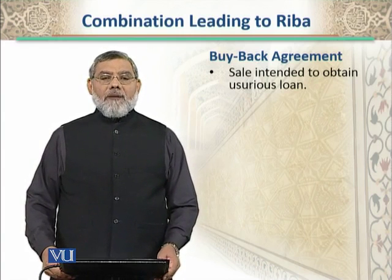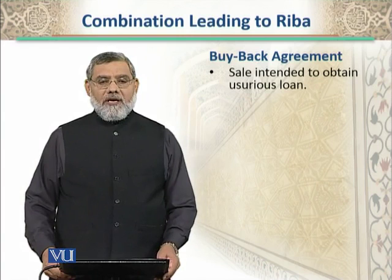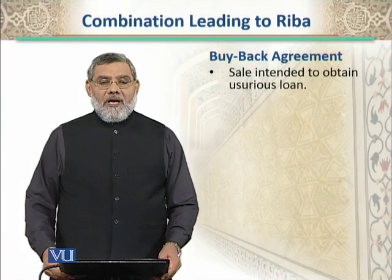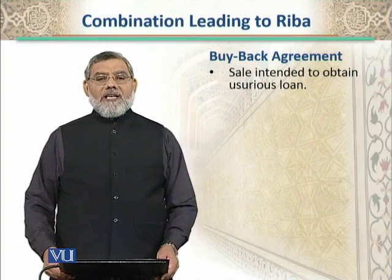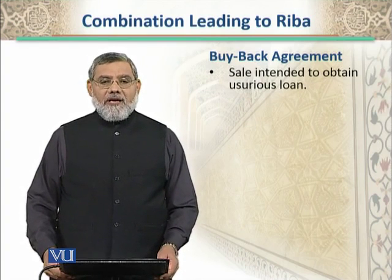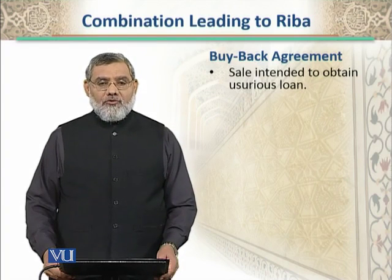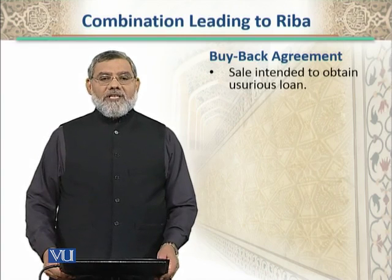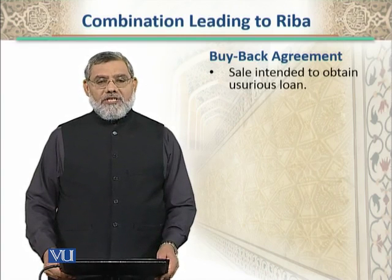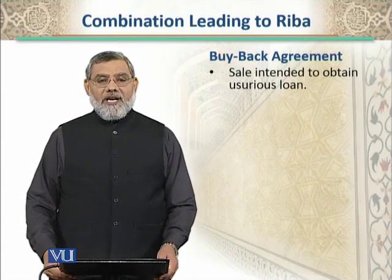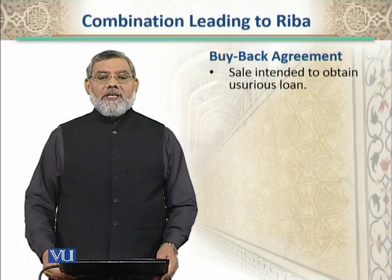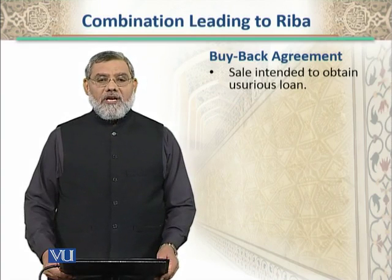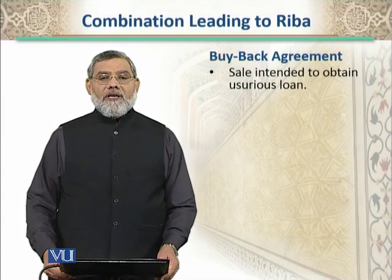This means that a buy-back transaction is taking place here. In reality, A needed eighty thousand rupees, and since he could not get eighty thousand rupees directly, his stratagem or subterfuge was this: he went to a person and bought something from him at a higher price — for example, one hundred thousand rupees on credit — and then immediately resold it to him for cash at a lower price, obtaining eighty thousand rupees.